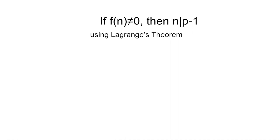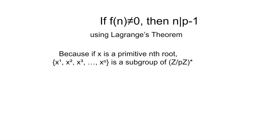Since if x is a primitive root, then x, x squared, x cubed, all the way up to x to the n, will form a subgroup of Z over pZ star.